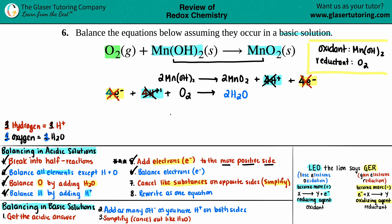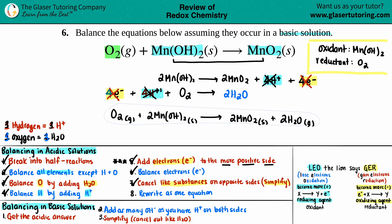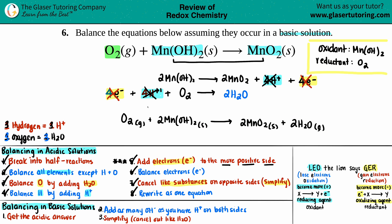Nothing else to cancel. Step eight: rewrite as one whole equation. Anything on the left stays on the left, anything on the right stays on the right. The final acidic answer is: O₂ (g) plus 2 MnOH₂ (s) yields 2 MnO₂ (s) plus 2 H₂O (l). Note that H₂O in acidic and basic solution is a liquid. That is the complete acidic answer.